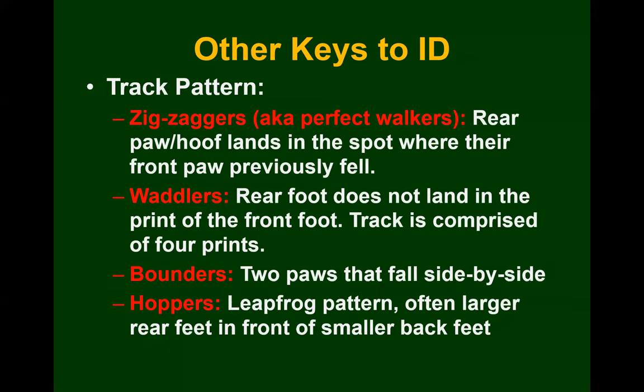Track pattern is also going to be important — there are four basic track patterns for mammals. First are zigzaggers, which we call perfect walkers because their rear paw or hoof lands in the exact same spot where their front paw previously fell when walking. Examples would be deer, moose, fox, coyote, and bobcat. Then there are waddlers, where the rear foot does not land in the print of the front foot and the track shows all four prints. Examples include bears, skunks, woodchucks, raccoons, muskrats, beavers, and porcupines.